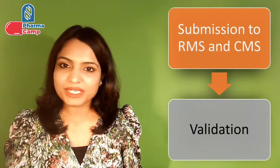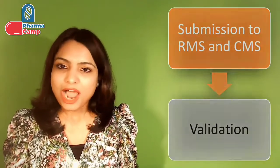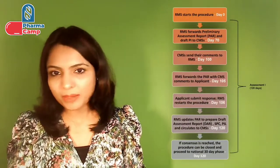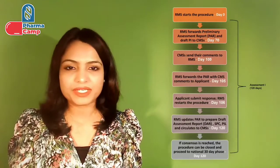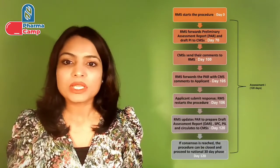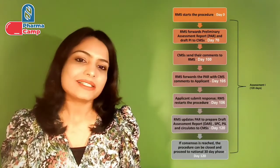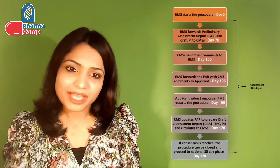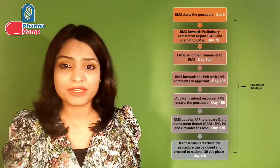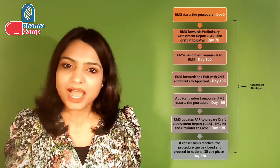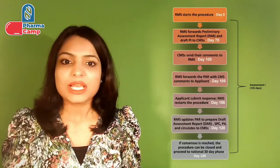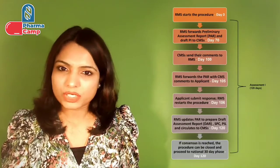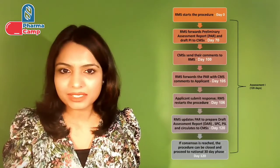Once validation is completed, Day 0 of the review starts. After the review, at Day 70, RMS prepares the Preliminary Assessment Report (PAR) and sends it to all the CMS. By Day 100, CMS send their comments to RMS — any extra questions, comments, or feedback. RMS will look into these comments, and if RMS and CMS agree that there are no major objections and the drug can be approved, then the cycle closes here.